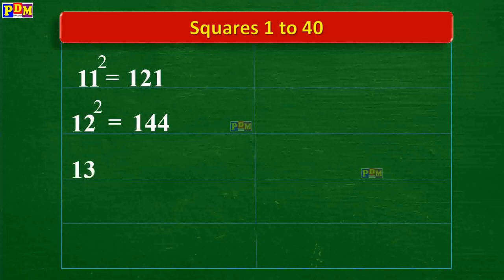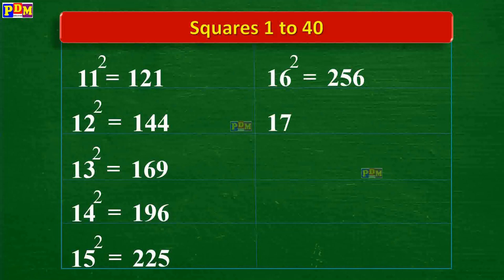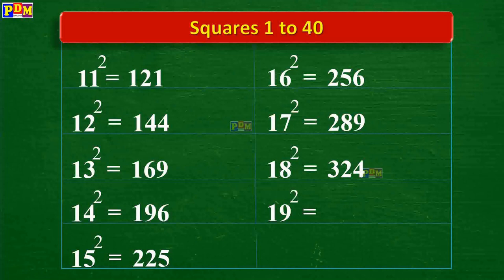13 squared is 169, 14 squared is 196, 15 squared is 225, 16 squared is 256, 17 squared is 289, 18 squared is 324, 19 squared is 361, 20 squared is 400.